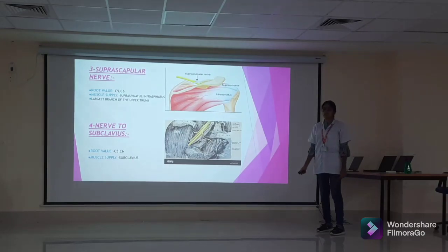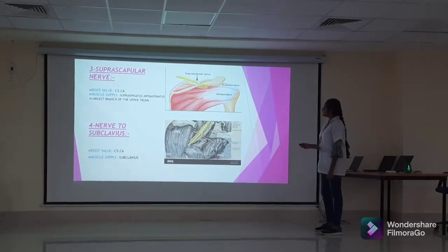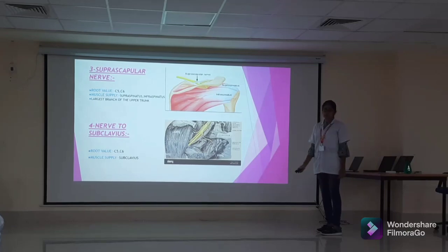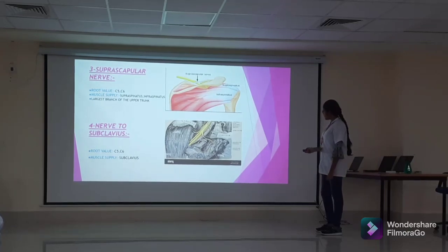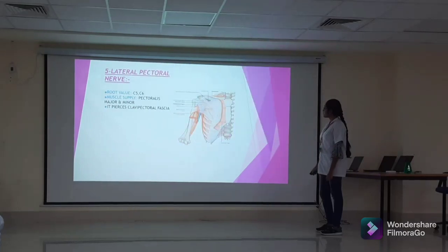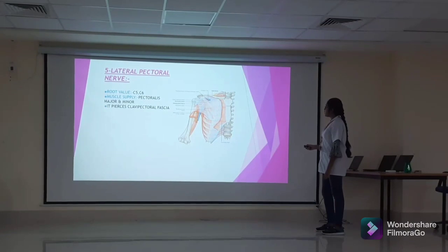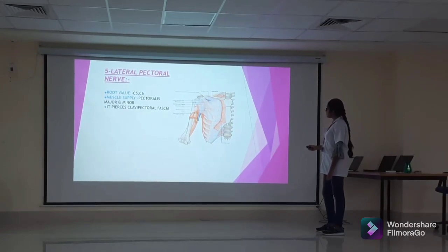Branches from the trunks include the suprascapular nerve, the largest branch of the upper trunk, which supplies the supraspinatus and infraspinatus muscles. The nerve to subclavius supplies the subclavius muscle. From the lateral cord, the lateral pectoral nerve supplies the pectoralis major and minor muscles and pierces the clavipectoral fascia.